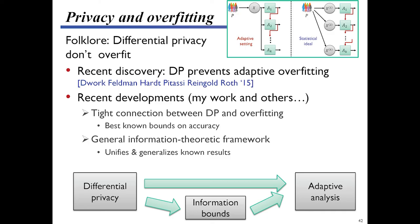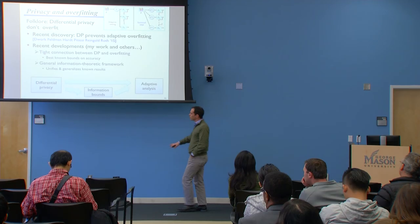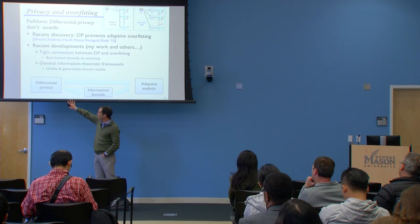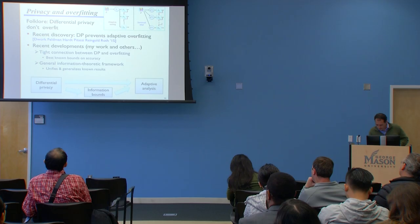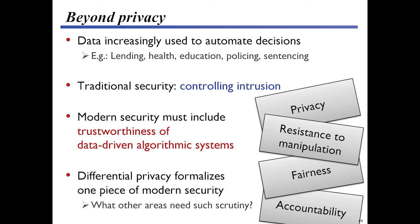It turns out that differentially private algorithms actually help prevent overfitting in these settings. They weaken the dependency between outcomes and individual data points in a way that you can still get meaningful results, and because there's less dependence on individual data points, you can prove statements about how biased subsequent analyses will be. This was driven a lot by a 2015 paper by Dwork, Feldman, Hardt, Pitassi, Reingold, and Roth. I've worked on this quite a bit, finding tighter connections between privacy, algorithmic stability, and overfitting, yielding the best known bounds on statistical accuracy for these adaptive settings, and an information-theoretic framework where we can interpret what's happening in terms of measures of information between the outcomes of the analysis and the input data.